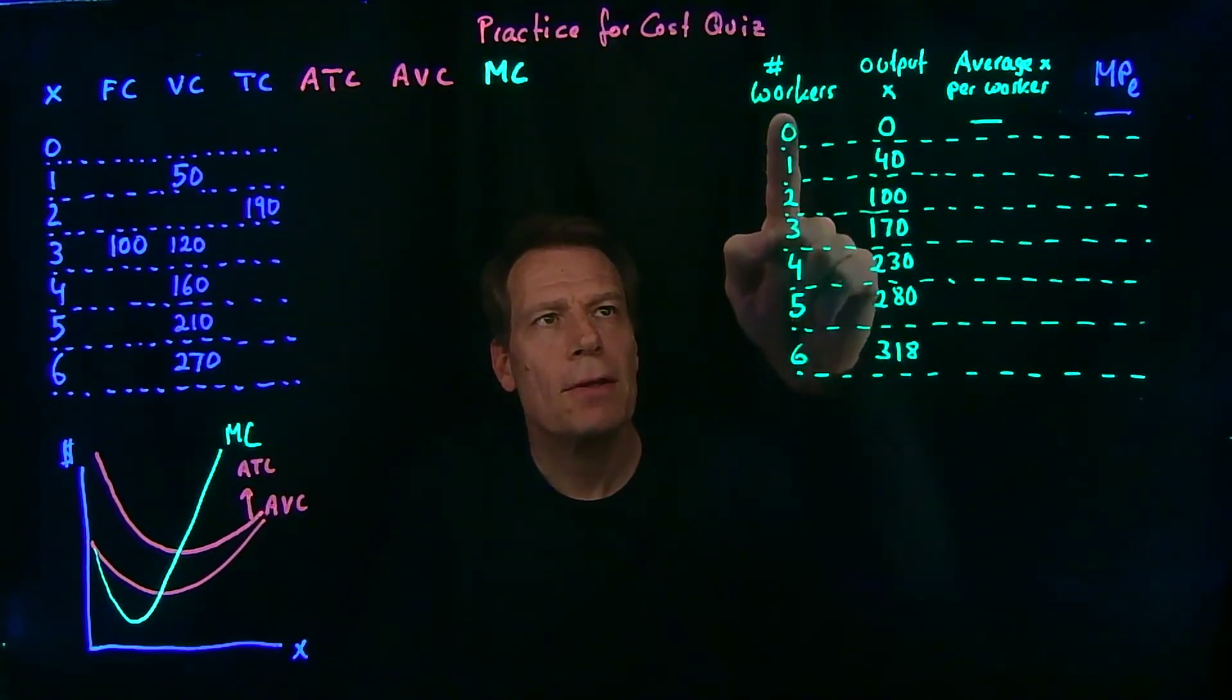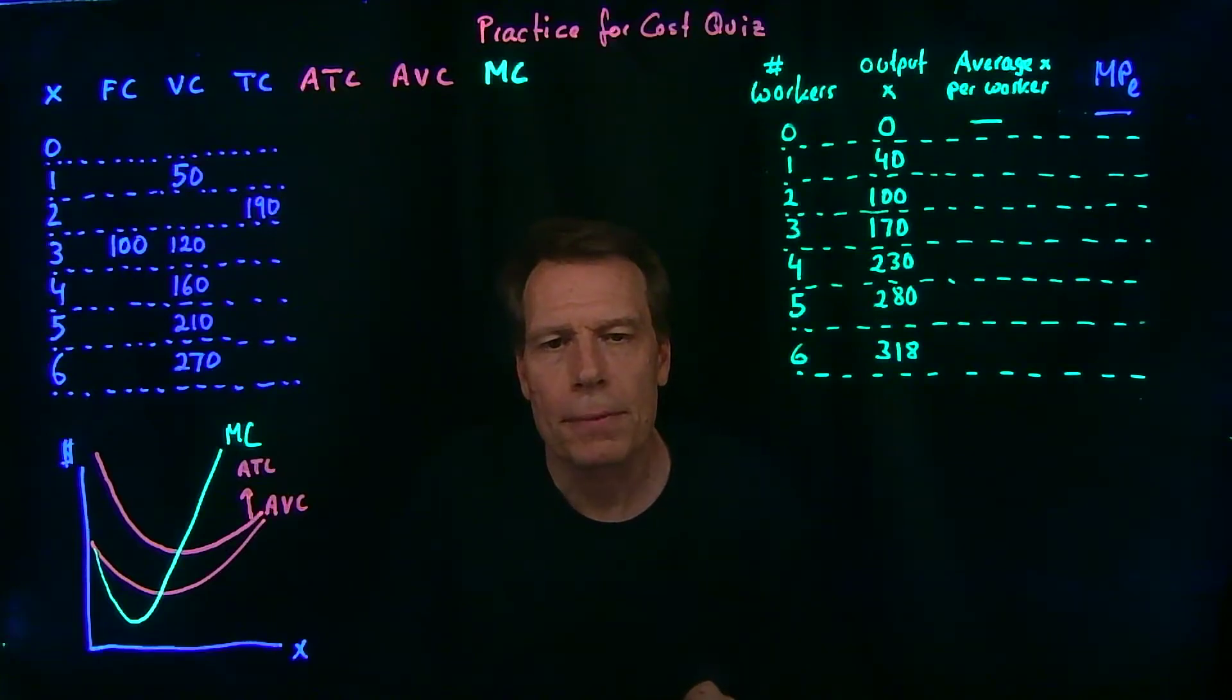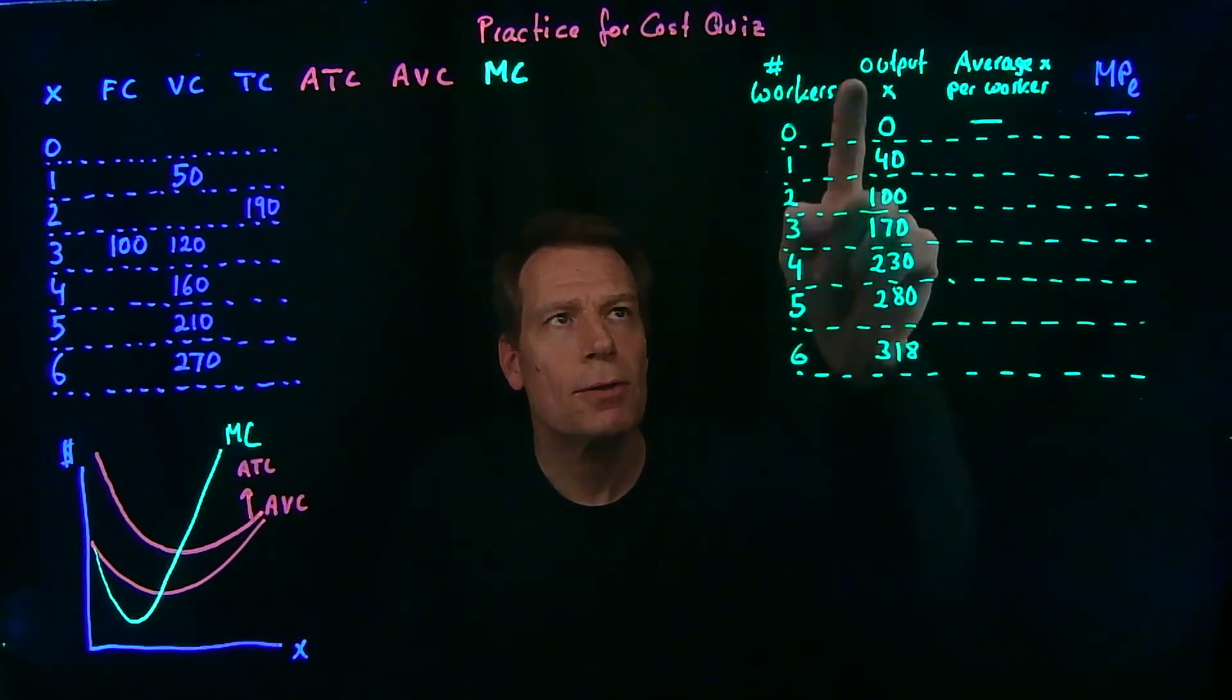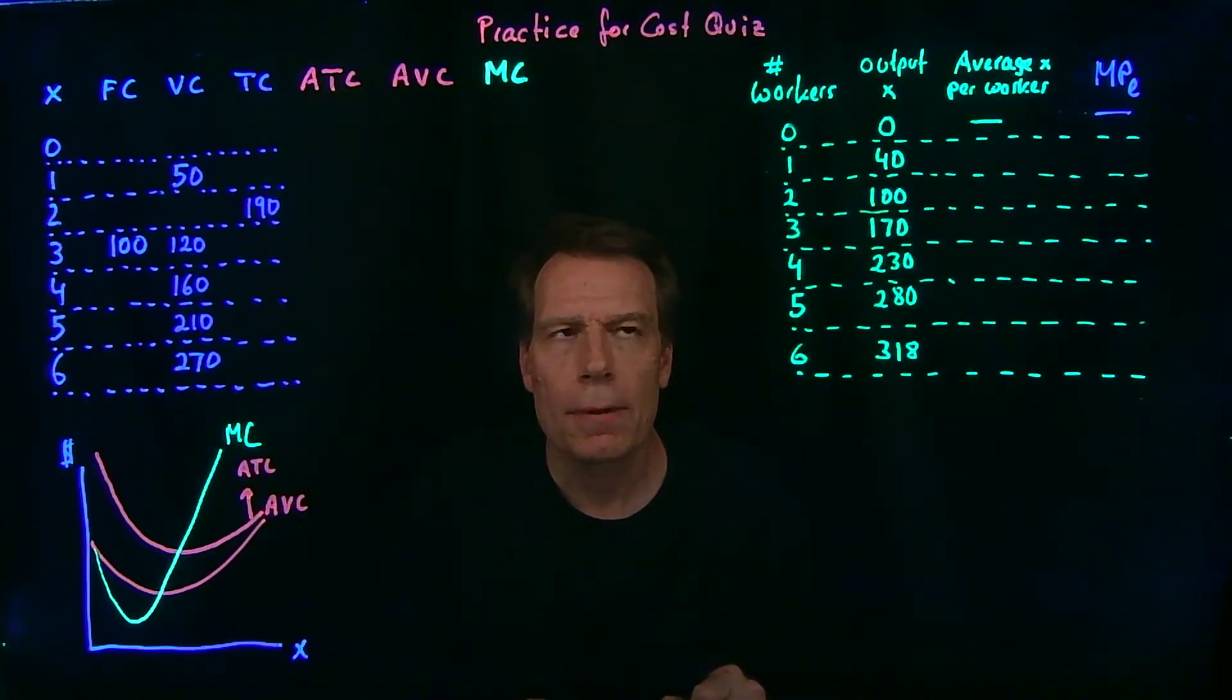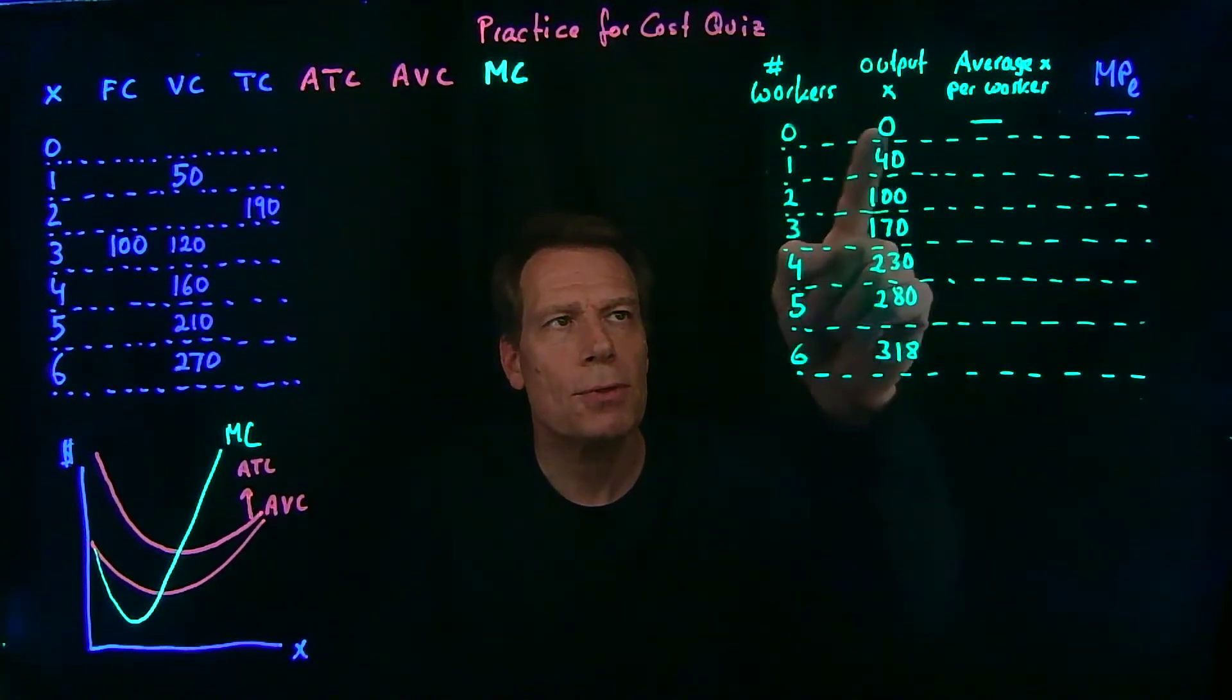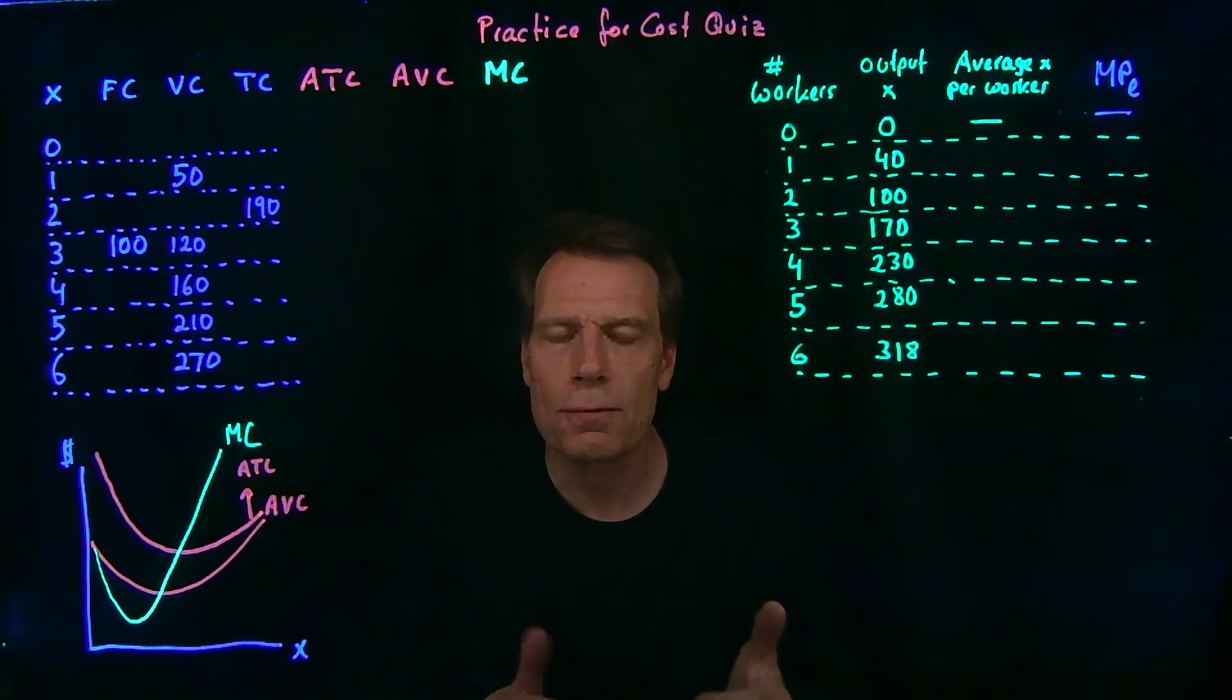In this table, I've illustrated in the first column the number of workers hired by your firm, and in the second column, the total output that your firm is producing with different numbers of workers. So if you don't hire any workers, you don't produce any output. If you hire one, you produce 40 units of output and so forth.